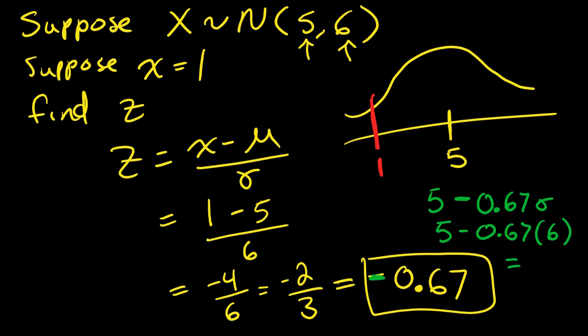If you plug that into your calculator, you'll get approximately 1. If you use the fraction and didn't do any rounding error, it would be exactly 1. So basically, 1 is 0.67 standard deviations below the mean - below because it's negative.